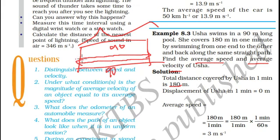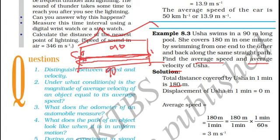She started at one point, reached the other end of the swimming pool, and came back to the same position, so the displacement is 0 meters. Displacement is defined as the difference between initial position and final position along with direction. She started at position 0 and returned to the same point, so initial position minus final position equals 0. Therefore, the displacement is 0.